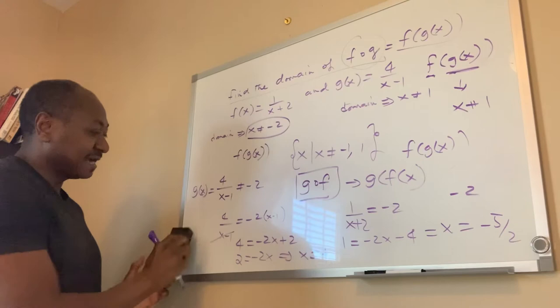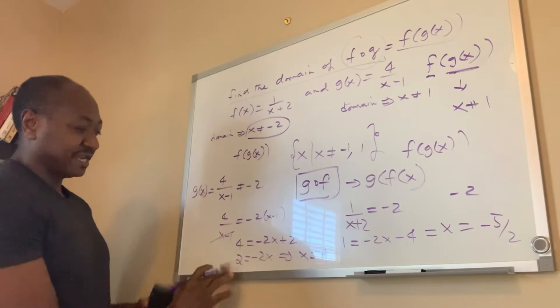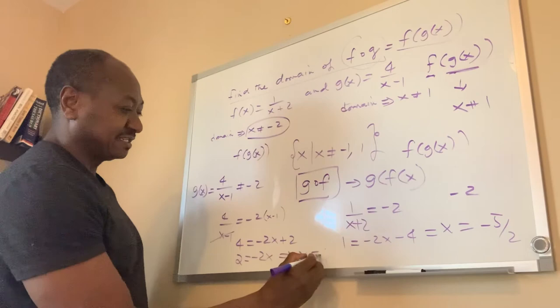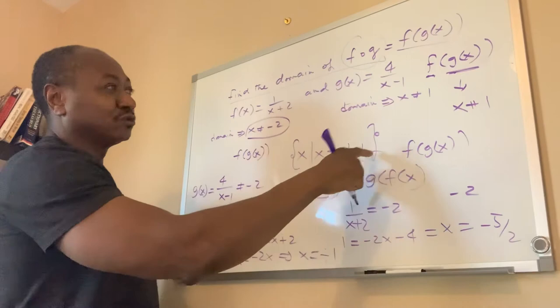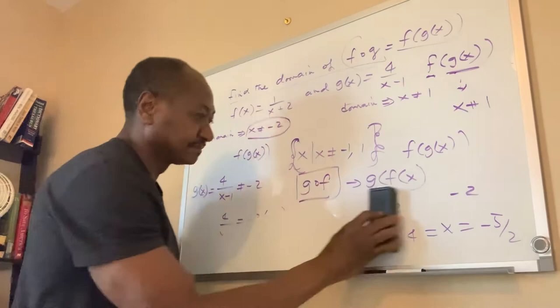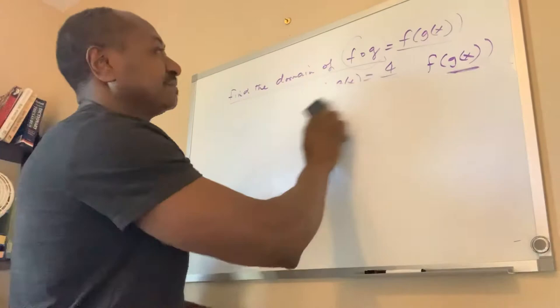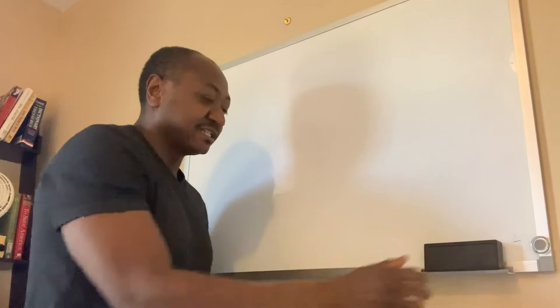So you go ahead and solve: g of x, which is 4 divided by x minus 1, cannot equal negative 2. When you solve it, you get x is not equal to negative 1. So the two domains you will exclude are x is not equal to negative 1, and x is not equal to 1 — which is the domain you found from g of x. That is your final domain of the composite function.